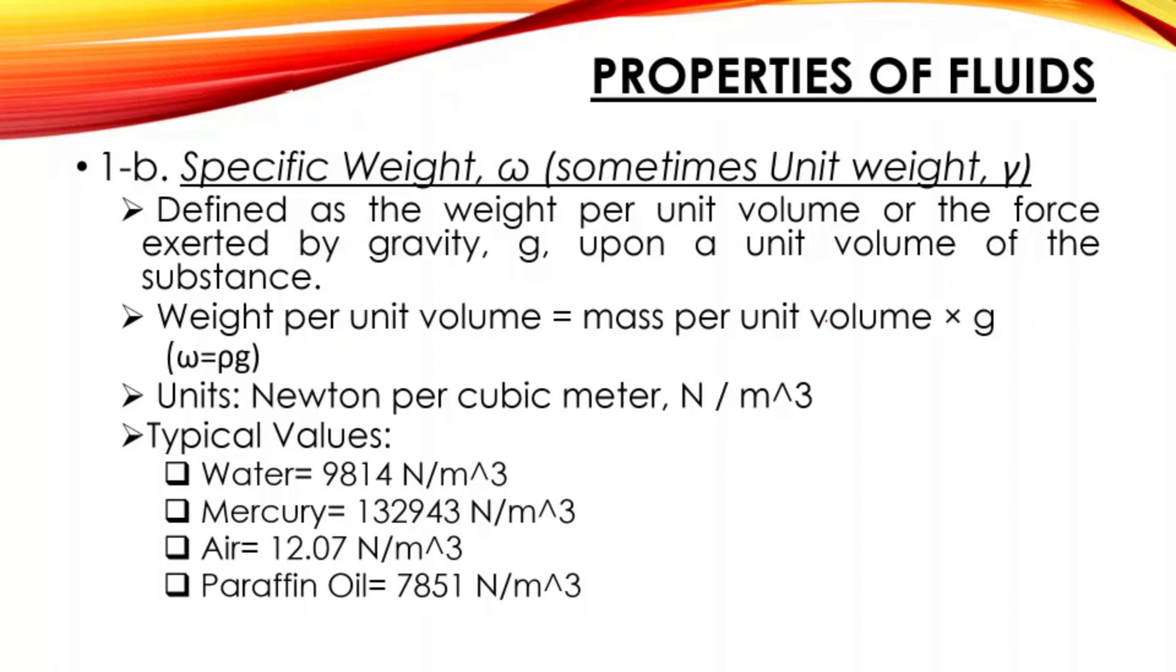Next, for letter 1-b, specific weight, or sometimes referred to as unit weight. Commonly, what's used is unit weight, or gamma. Defined as the weight per unit volume, or the force exerted by gravity g upon a unit volume of the substance. That is equal to this equation here. The weight per unit volume is equal to mass per unit volume times gravity, or simply equal to weight over volume.